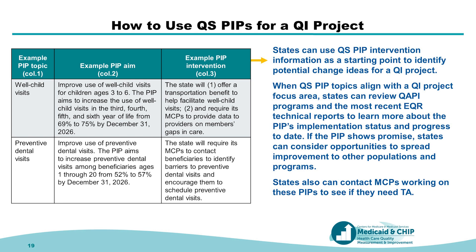Whenever you start a QI project, we recommend that you review the PIPs described in your quality strategy, as they can be a starting point for considering change ideas to test. If a PIP topic in the quality strategy aligns with your QI project focus area, review managed care plan QI programs in your state's most recent external quality review report to learn more about the implementation status of the PIP and progress to date. If the PIP intervention shows promise, you can consider using your QI project to spread it to other populations and programs. You can also contact the managed care plans working on the PIPs to see if they need technical assistance and support.